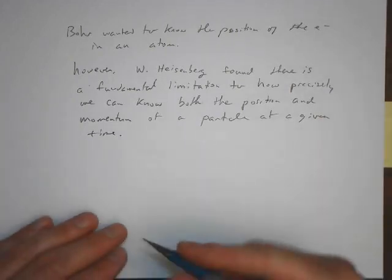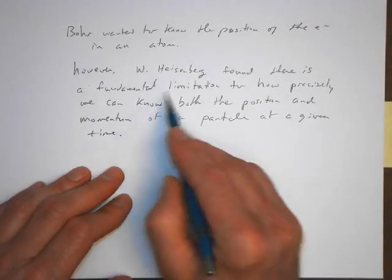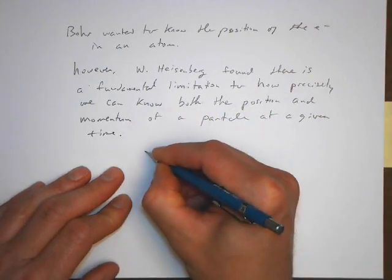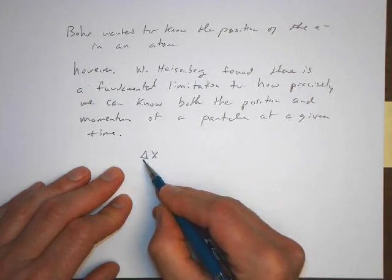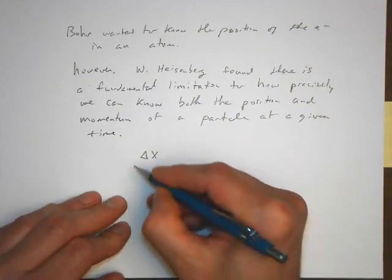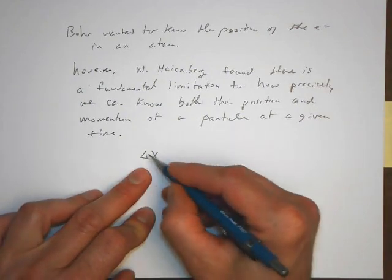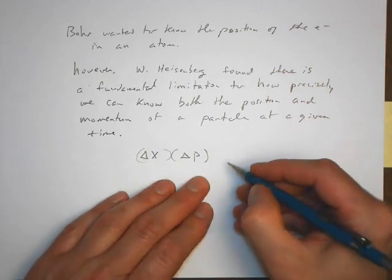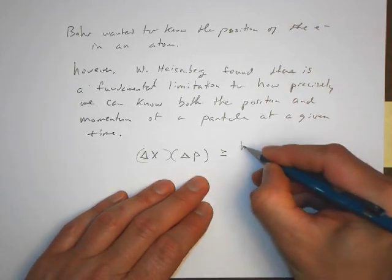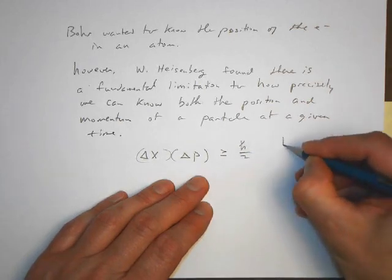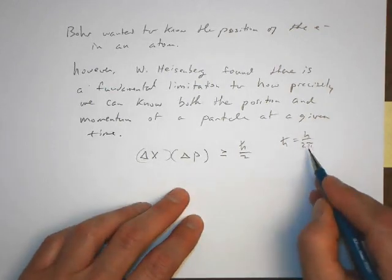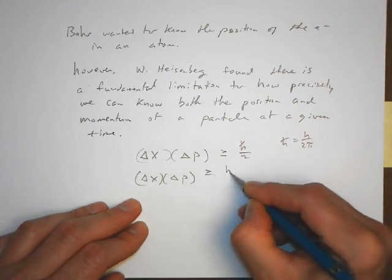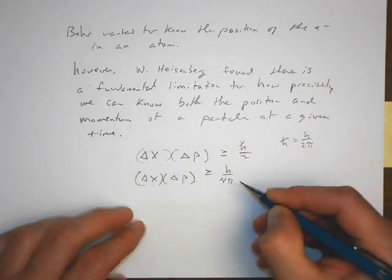So, these quantum effects that de Broglie was seeing happen with very small things moving very fast, right? And that's essentially what's going on here too. So, there's a fundamental limit to how precisely we can know both the position and the momentum of a particle at a given time. We might write it something like this: delta x, meaning how precisely we know the position of something, times how precisely we know the momentum of something, has to be equal to or less than or equal to h over 4π. So what we have here actually is this: h over 4π.